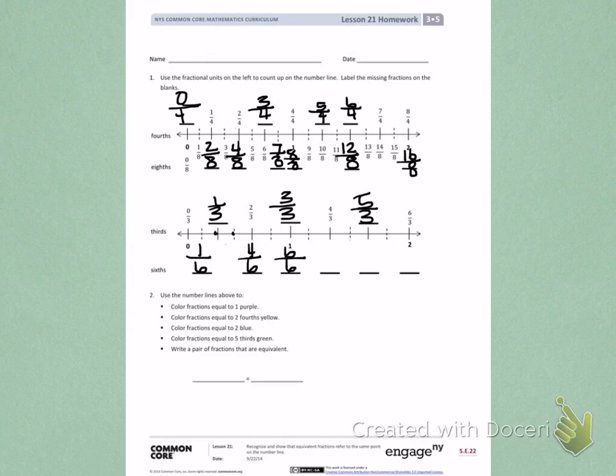7 sixths, 8 sixths, 9 sixths, 10 sixths, 11 sixths, and 12 sixths. There's my number line.